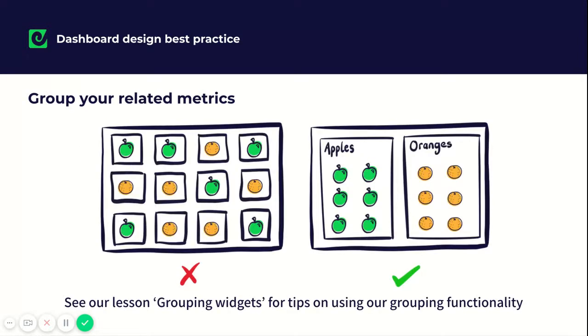You also want to make sure that you're grouping your related metrics. If you have a mixture of products or campaigns or any varying types of metrics, it's best to make sure that those that are related are grouped together. So it's easy for anyone viewing the dashboard to see that they are related.